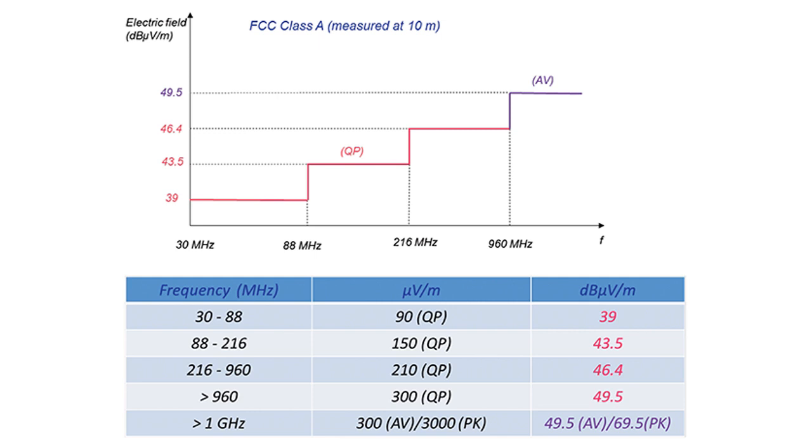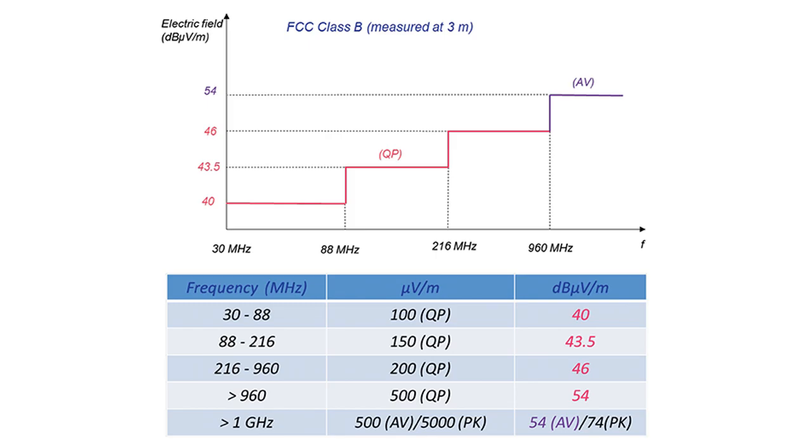FCC allowable limits for Class A and Class B devices are shown in figures.